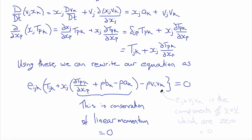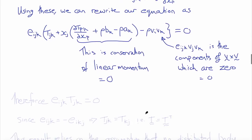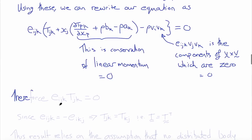We observe that e_ijk times v_i v_k are components of the cross product of v with itself. But the cross product of a vector with itself is zero because the sine of the angle between the two vectors is zero. So this term disappears, and we're left with e_ijk times t_jk equals zero.